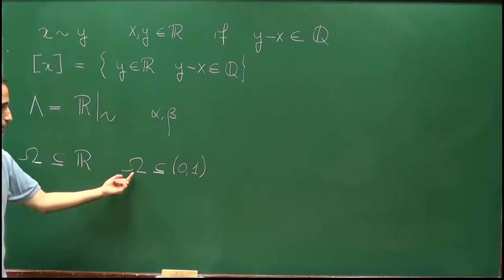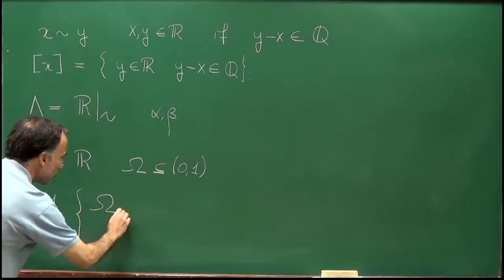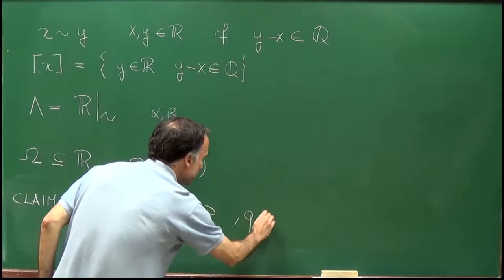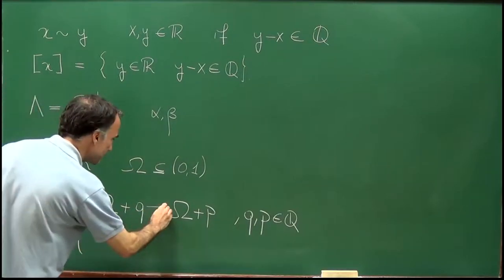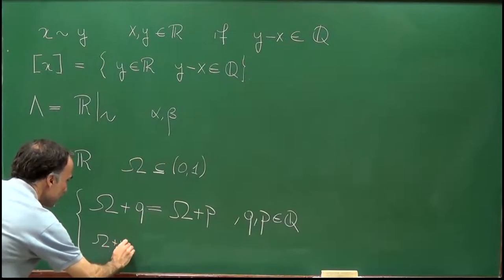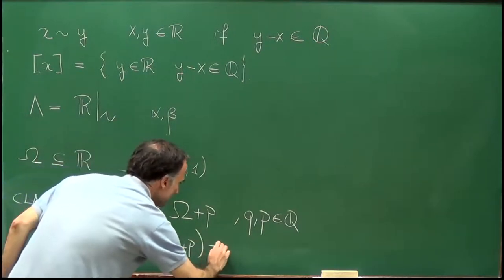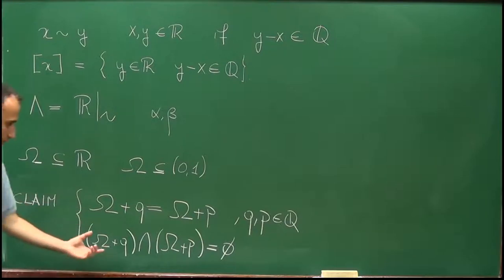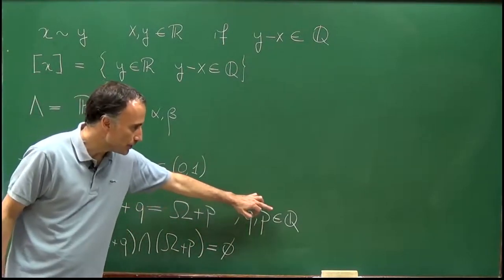Now I will prove some properties of Omega. Consider the sets Omega+q and Omega+p, where q and p are rationals. I claim that either these two sets are equal or they are disjoint — that is, the intersection of Omega+q with Omega+p is the empty set. So we will prove this dichotomy: either the two sets have no intersection, or they are equal, for any two rational numbers q and p.